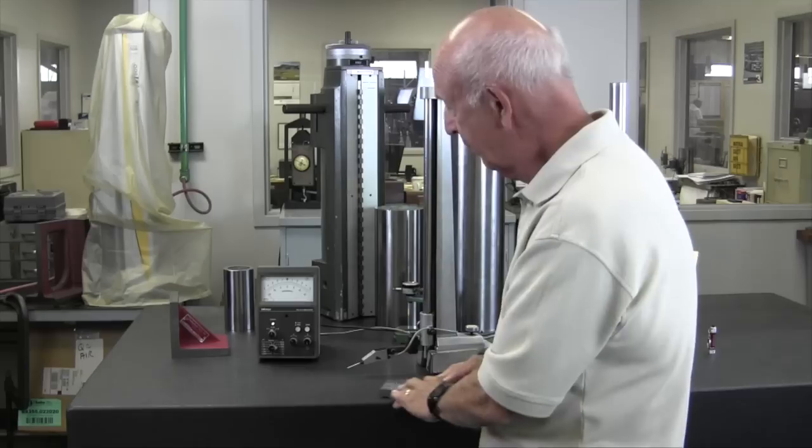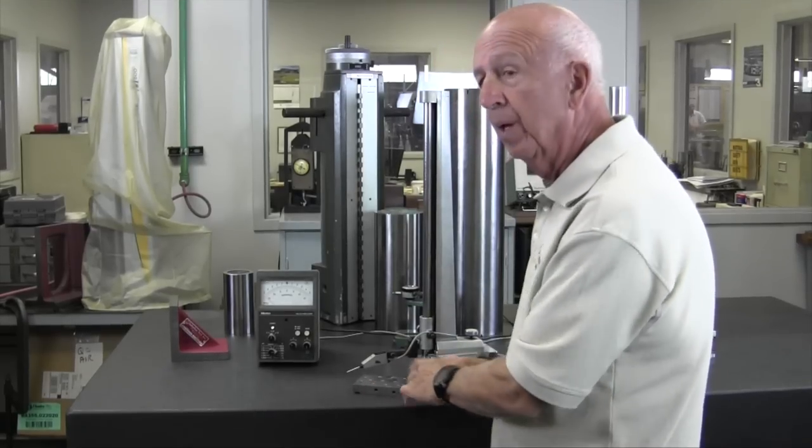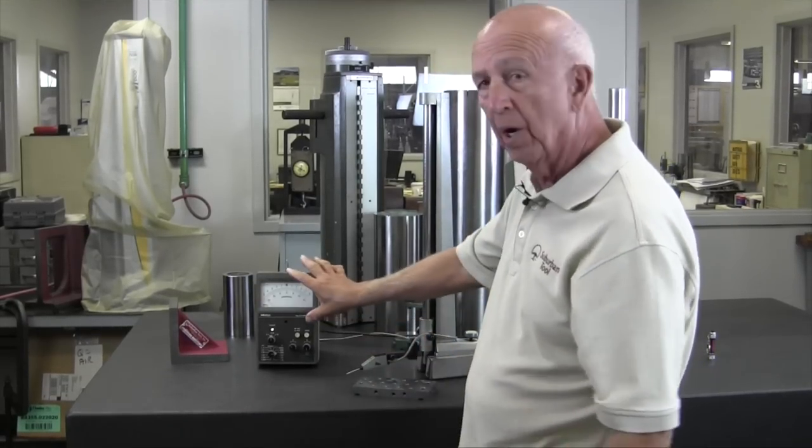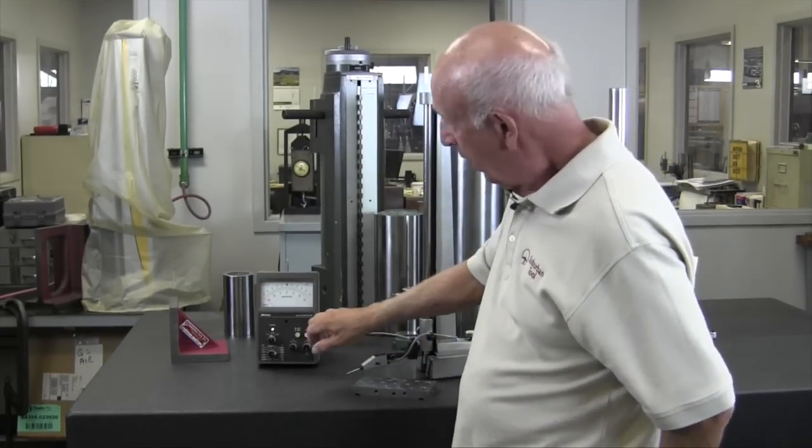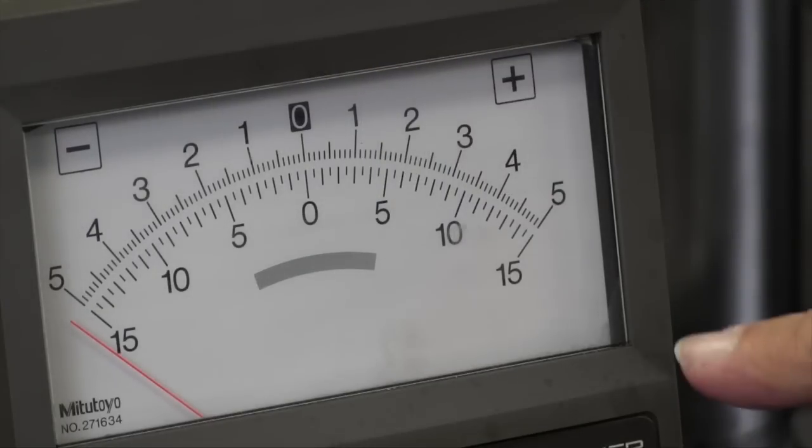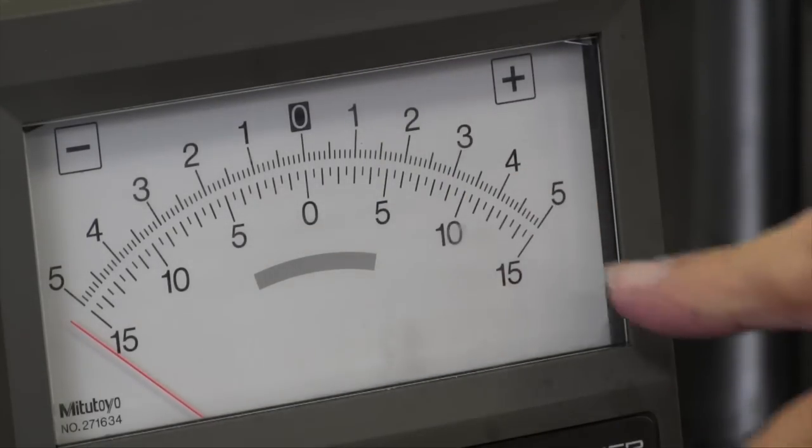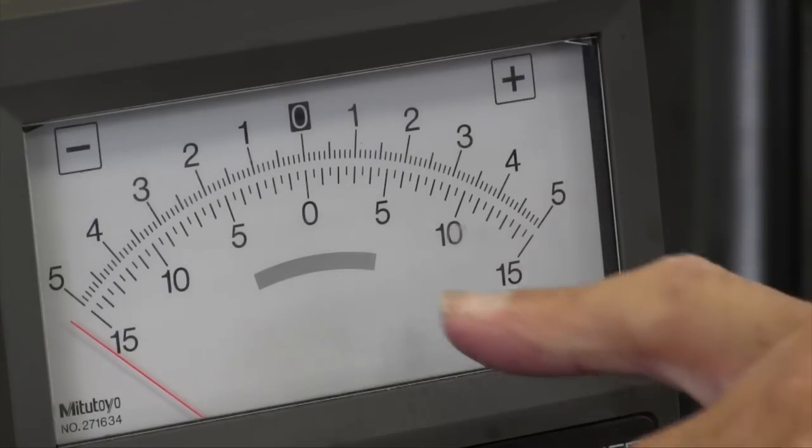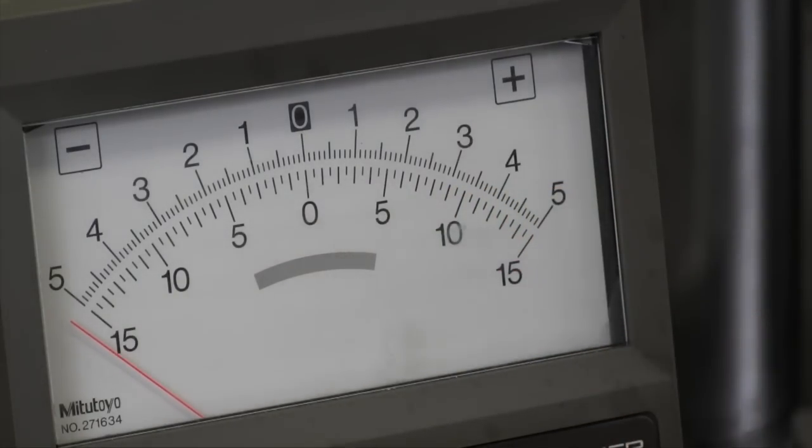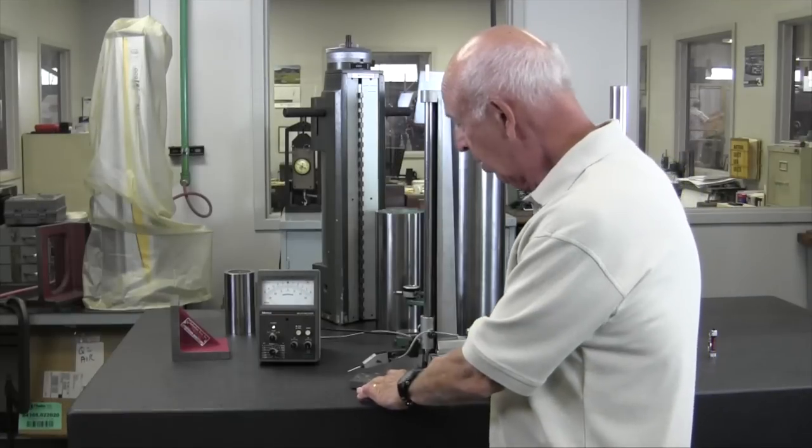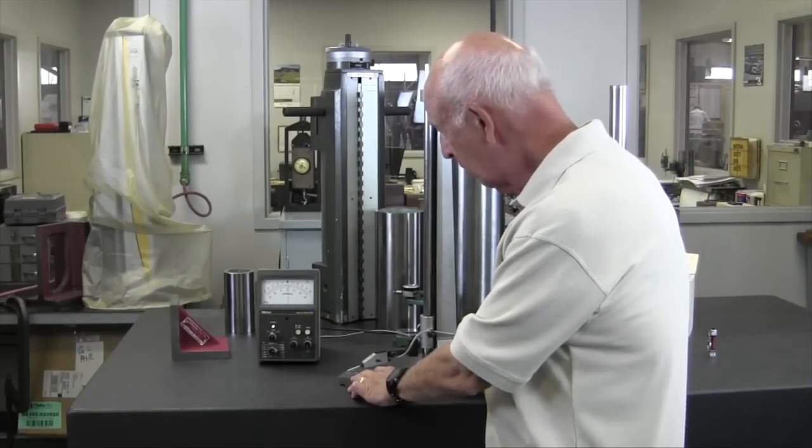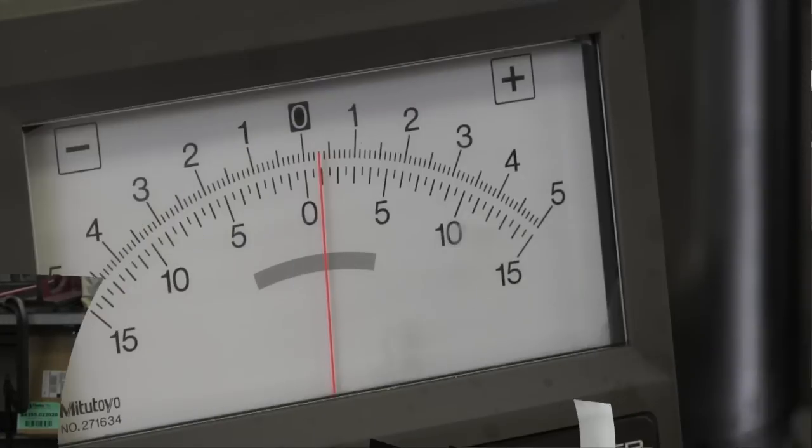How do we check it for flatness? The first thing we're going to do is set our indicator to the proper scale. We've got it set for one and a half thousandths from side to side, so we're going to use the lower scale. You can see where it's five tenths, one thousandths, thousandths and a half. So the first thing we're going to do is put it under the indicator to zero it in.